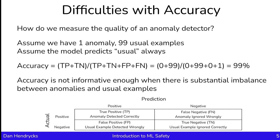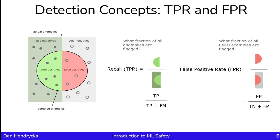This shows accuracy is not informative enough when there is substantial imbalance between anomalies and usual examples. The difference in accuracy between a model that's functioning well—say, one with 100%—and this completely broken model is just 1%. A model that's outputting 'usual' always is getting 99%, and a flawless model will be getting 100%. When the difference between the metric for a functioning model and a dysfunctional model is only 1%, this suggests we should use a different metric.